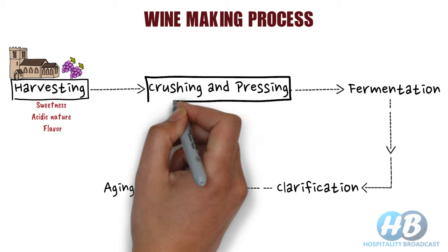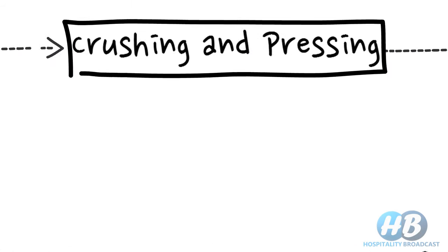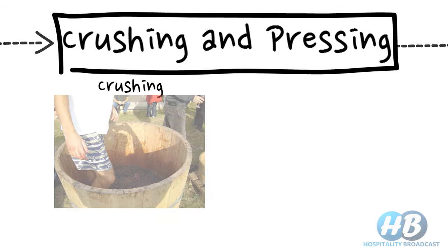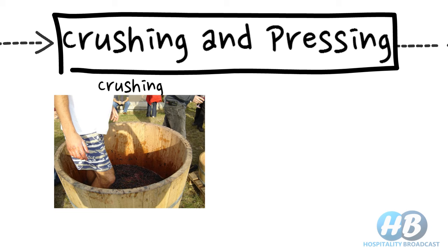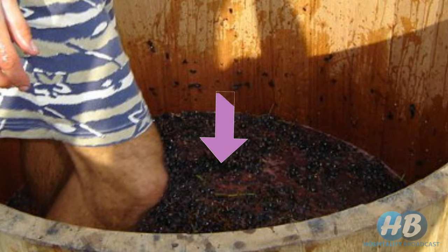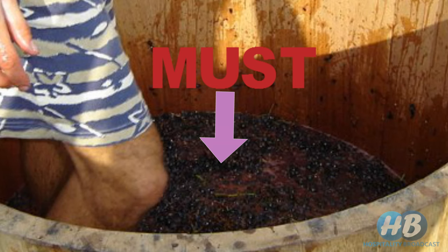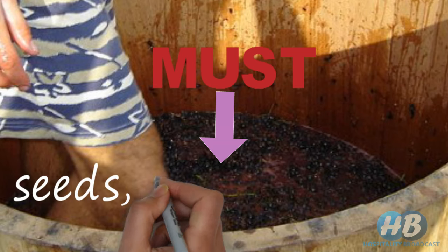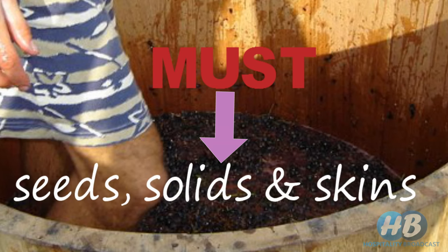After sorting of grapes in bunches, it's time for crushing and pressing. In the past, crushing used to be done by feet. People used to stomp the grapes flat in large bins or barrels. Even men and women performed the harvest dance in these barrels as part of their tradition. After crushing, what we get in the barrel is must. Must is the fresh juice of grapes containing seeds, solids, and skins of grapes.